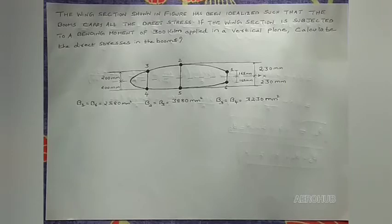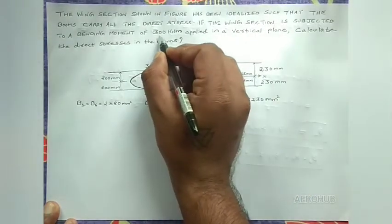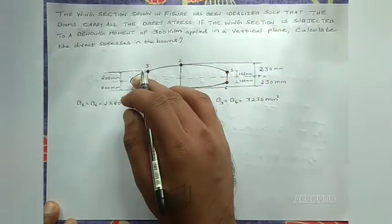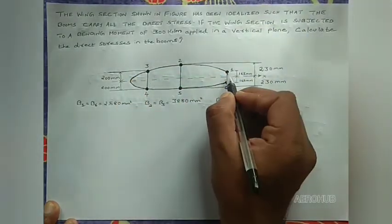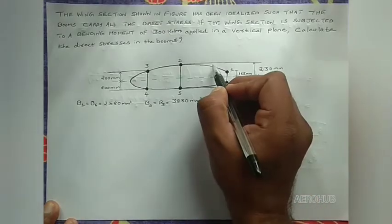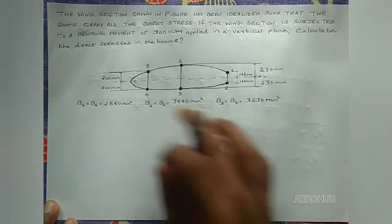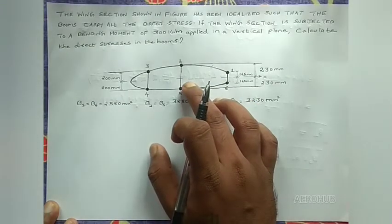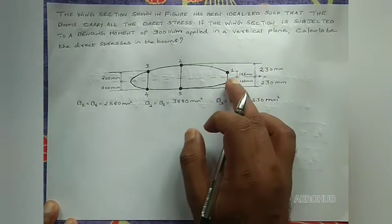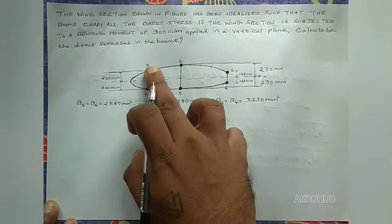This is a wing section subjected to a bending moment of 300 kilo-newton-meter in a vertical plane. It is idealized such that there are six boom areas — one, two, three, four, five, six — and the boom areas carry the bending stress while the skin carries the shear load. The section is symmetric about the horizontal x-axis, with boom area 1 equal to 6, boom area 2 equal to 5, and boom area 3 equal to 4.